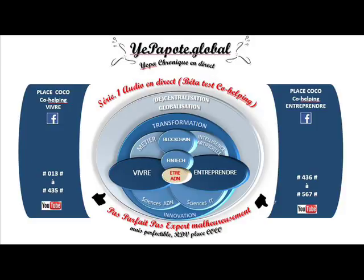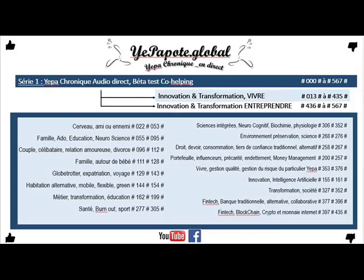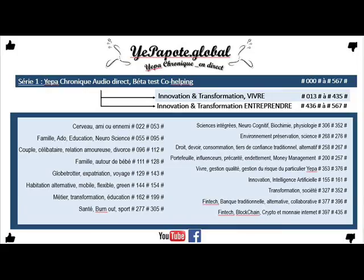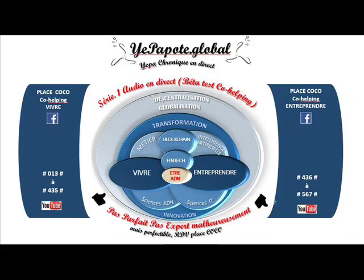Si vous avez choisi le réel normal, vous procéderez de la même manière que le réel simplifié, c'est-à-dire que vous réalisez vos déclarations à fournir avant le 1er avril de chaque année. Si vous êtes une entreprise relevant de l'impôt sur la société, vous pourrez réaliser votre télé-déclaration et télé-paiement obligatoire, et vous utiliserez l'imprimé 2065 à 2050 à 2059G.